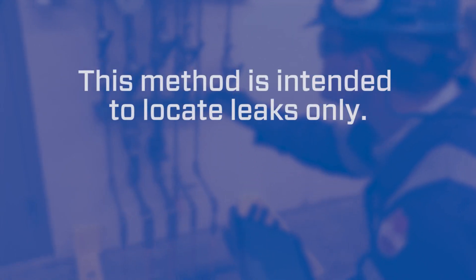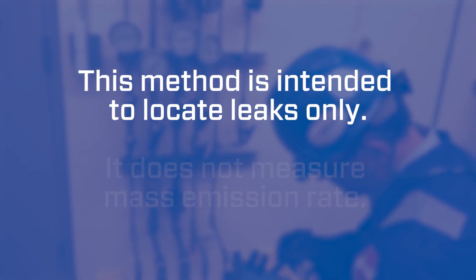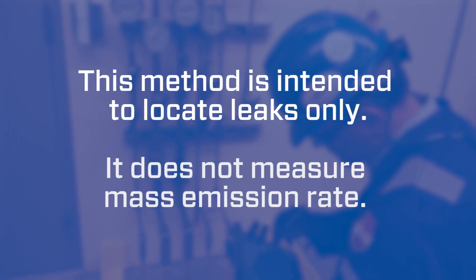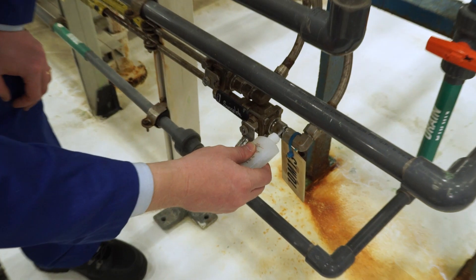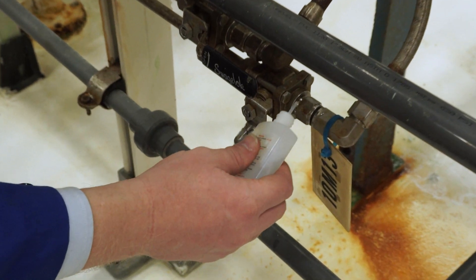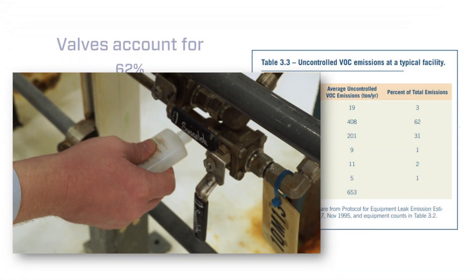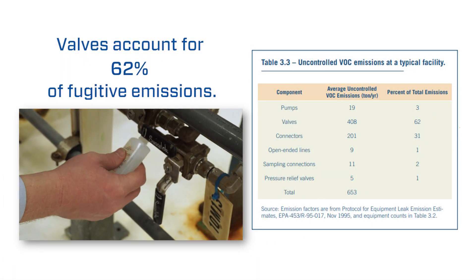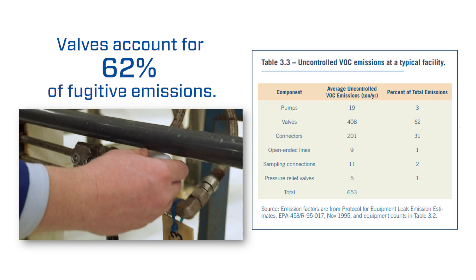This method is intended to locate leaks only — it does not measure mass emission rate. Many LDAR programs focus on valves, and for good reason: valves account for 62% of fugitive emissions.